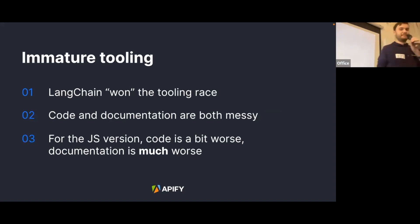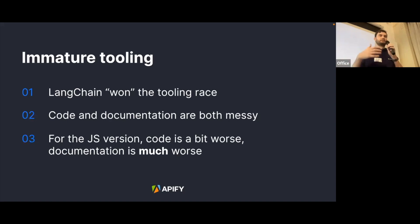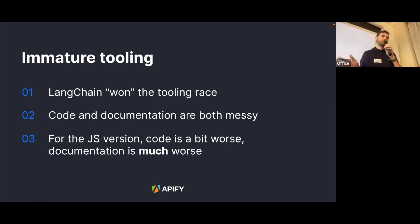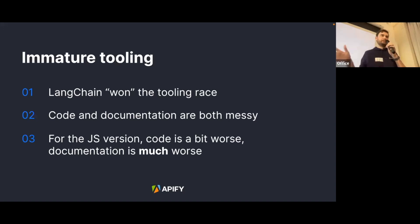The last challenge is a bit controversial, but the tooling for LLMs is not as good as it could be. With the rise of ChatGPT, there was a race to make the best LLM tooling — connecting vector databases, document loading, chat history. LangChain is the winner; they raised a $10 million seed round and have a cloud platform called LangSmith. But the codebase is patchy and messy — they make breaking changes all the time. They even deleted our integration during a refactoring, and I had to work my way to get it back. The JavaScript version is worse, and the documentation is much worse — it's a tragedy to work with.